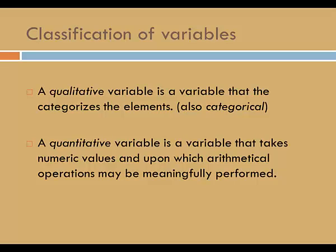Variables are classified as qualitative or quantitative. A qualitative variable is a variable that categorizes the elements, and is sometimes referred to as a categorical variable. A quantitative variable is a variable that takes numeric values, and upon which arithmetical operations may be meaningfully performed. All quantitative variables will have numeric values, but just because a variable has numeric values does not guarantee that it's quantitative. To be sure, you can use my go-to arithmetical operation — an average. If you average the values for a certain variable and get a meaningful result, then the variable is quantitative; otherwise, it must be qualitative.